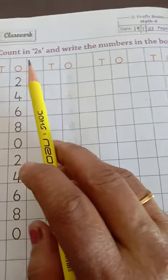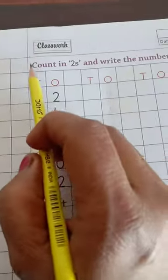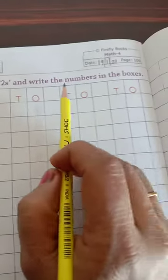Good morning students, today we will do maths 4 page number 109 and 110. Writing today's date 19-1-21, count in 2's and write the numbers in the box.